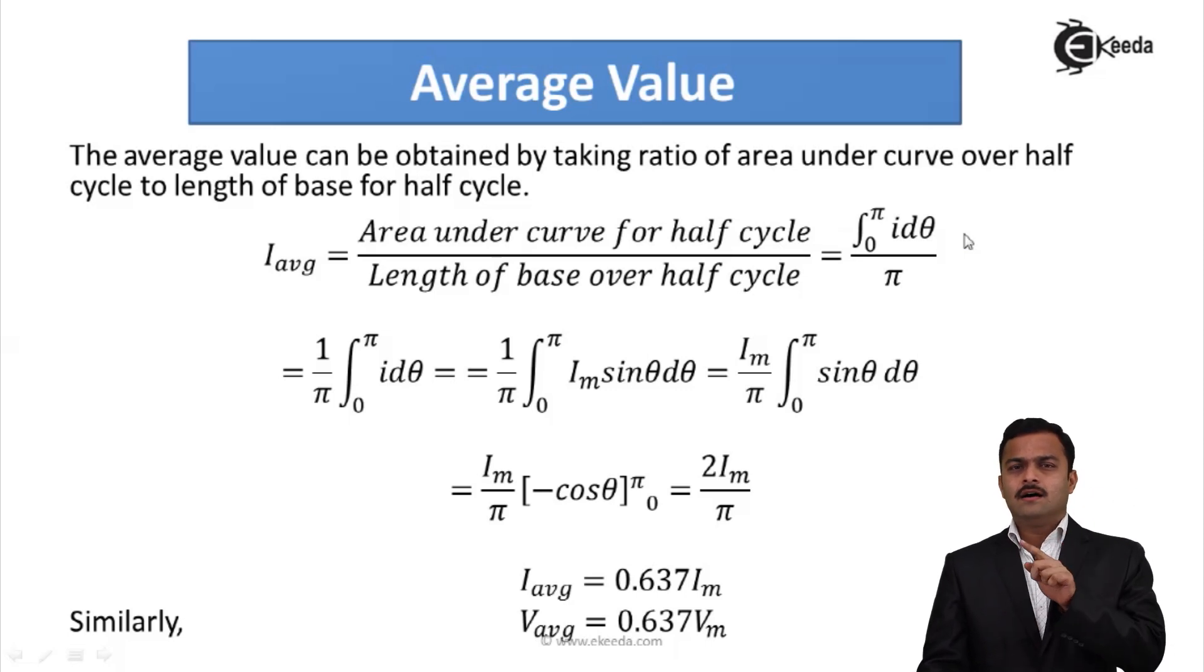Length of half cycle is π. So 1 over π I can take it out, integral 0 to π I dθ. If I solve, instead of I, I need to substitute Im sin θ. Im I can take it out as it is constant. So Im by π integral 0 to π sin θ dθ.